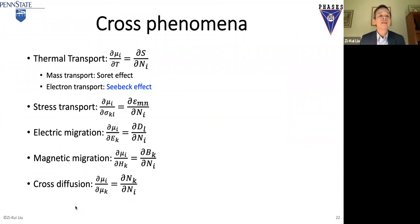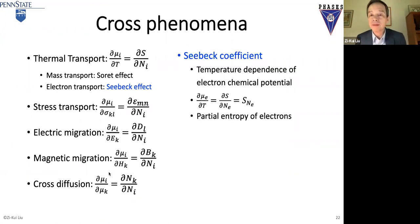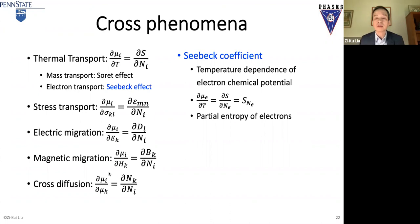One cross phenomenon we have been recently working on is the Seebeck coefficient. For the Seebeck coefficient, we have to think about the electron as a component: an electron has an electron chemical potential, and that chemical potential can be affected by temperature. We actually believe the Seebeck coefficient is a thermodynamic property — it is the effect of temperature on the chemical potential of the electron. Using the Maxwell relation, it equals the partial entropy of the electrons.